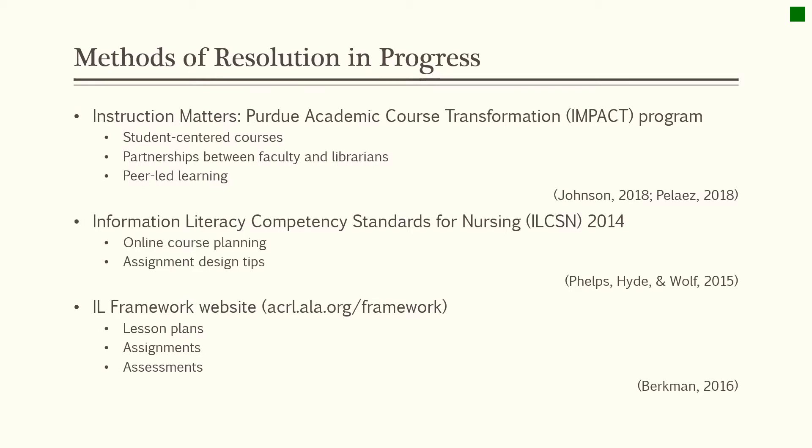Over the past few years, numerous strategies for expanding and improving instructional methods for information literacy have been implemented and tested. The IMPACT — Instruction Matters: Purdue Academic Course Transformation — program is a course offered to teachers at Purdue that has demonstrated significant improvement in attaining information literacy goals through revising courses to be more student-centered and establishing partnerships between faculty and librarians. Specifically, one teacher explained how collaboration with an academic librarian led to the incorporation of peer-led team learning workshops structured to develop biological information literacy in students.